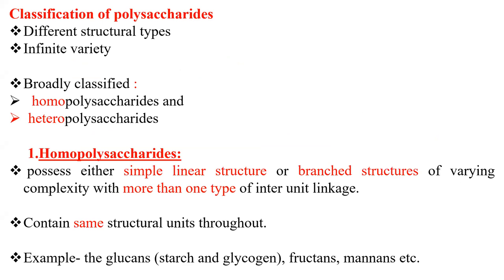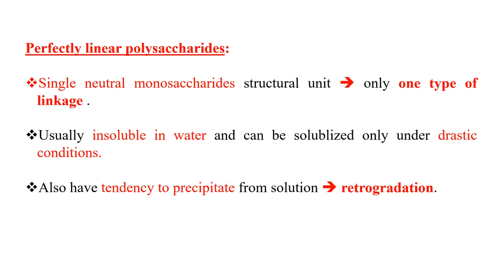Homopolysaccharides possess either simple linear structures or branched structures of varying complexity with more than one type of inter-unit linkage, such as alpha-1,4 glycosidic linkage. They contain the same structural units throughout the chain; examples include glucans such as starch and glycogen, fructans, mannans, etc. Perfectly linear polysaccharides have single neutral monosaccharide structural units with only one type of linkage. They are usually insoluble in water and can only be solubilized under drastic conditions. They also have a tendency to precipitate from solution, a property known as retrogradation, which is a very important characteristic of starch.